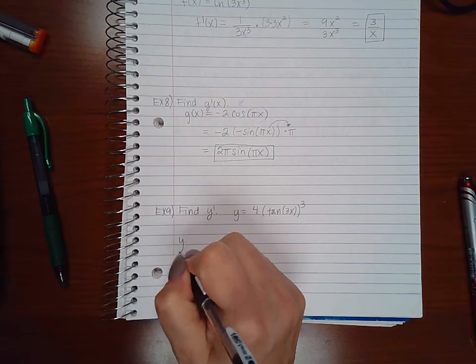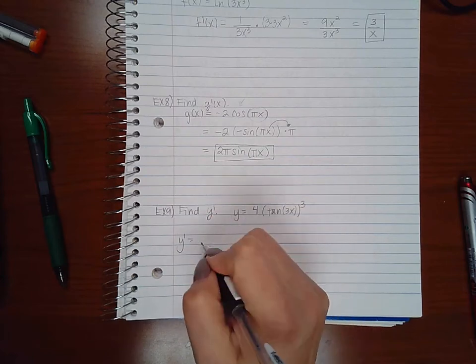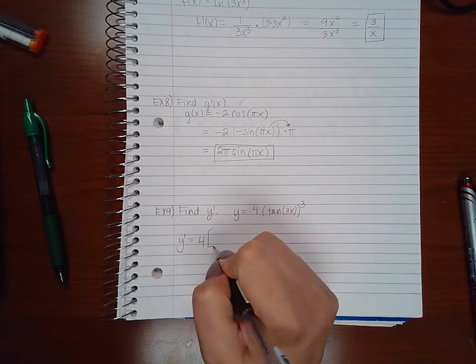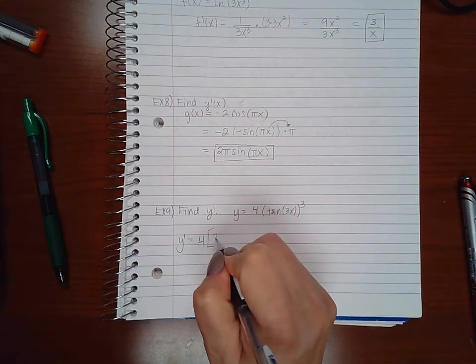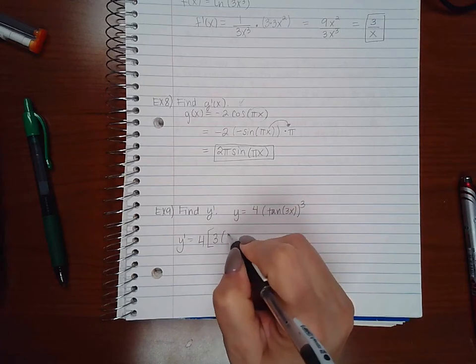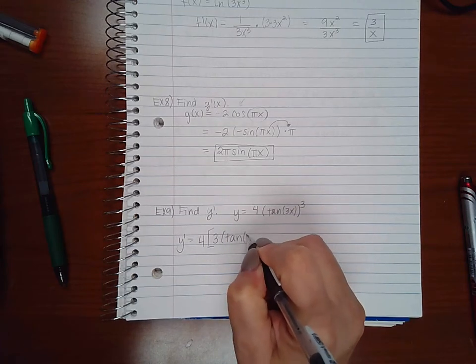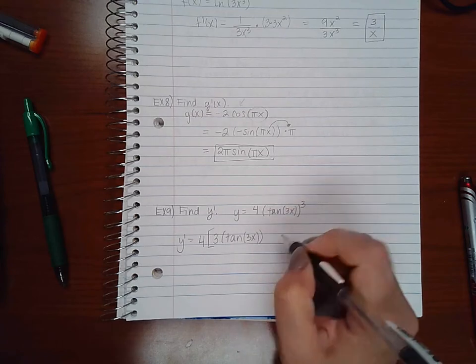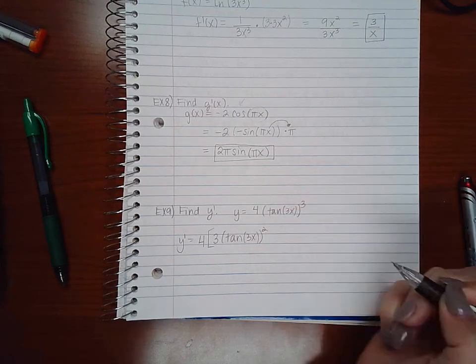Let's first start off at the beginning. We have our constant multiplier 4, we bring down our power 3, and then we keep the base the same. And then we decrease our power by 1, so we get 2.